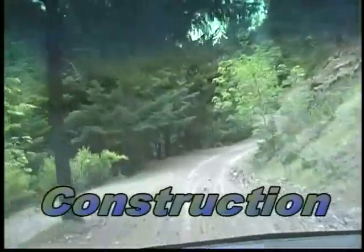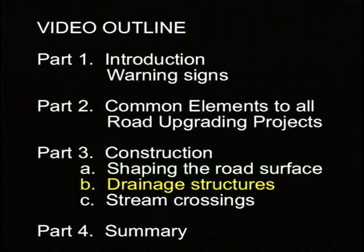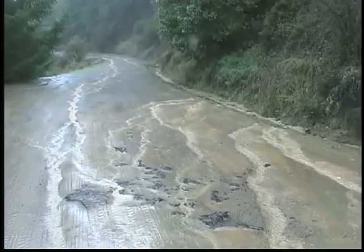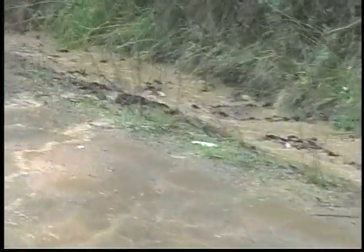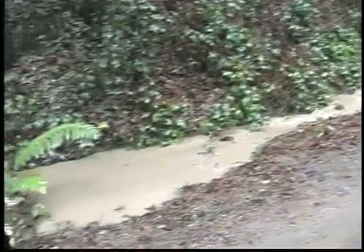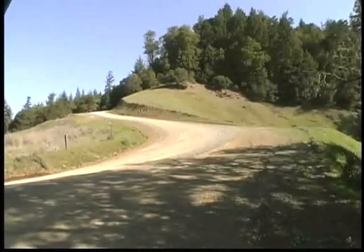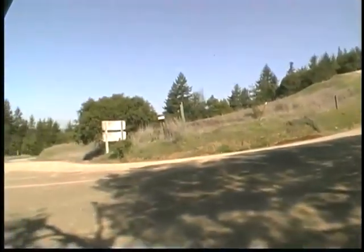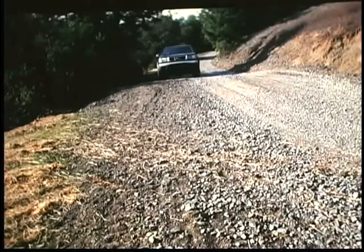Part 3, construction, is divided into three parts: first, surface drainage through shaping the road surface; then surface drainage through drainage structures; and then stream crossing repair and upgrades. You might wonder how to minimize the loss of material on the top of the road — a surprising depth of soil is lost from road surfaces every year. Unfortunately, a lot of it ends up clouding rivers and streams. In this section we will try to convey the different strategies used for surface water road drainage to minimize this surface erosion.